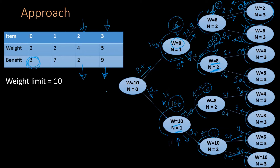Now we can compute the benefit at the root state w=10, n=0. Including item 0 gives benefit 3 plus 16 = 19. Excluding item 0 gives 0 plus 16 = 16. So the maximum benefit obtainable is 19.